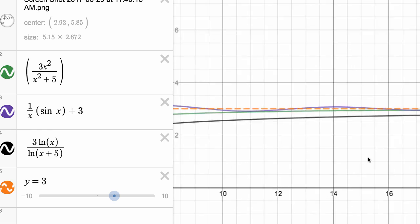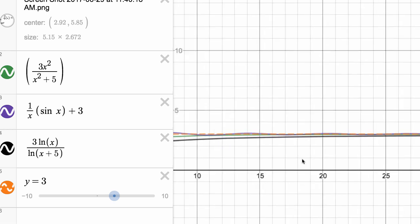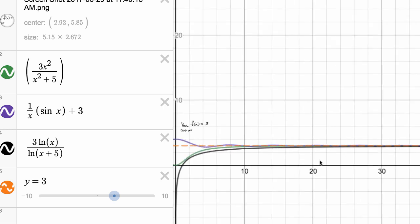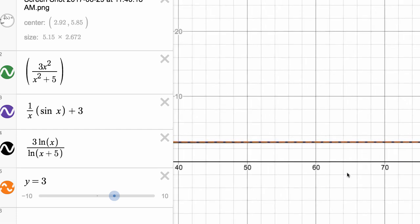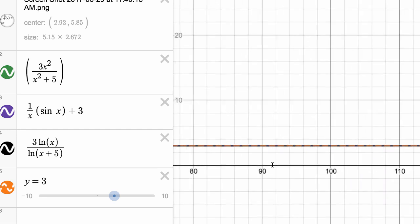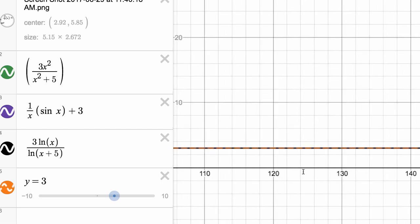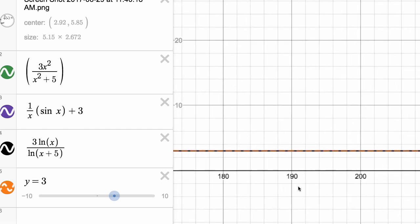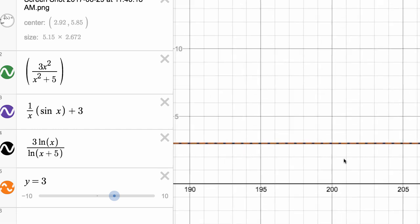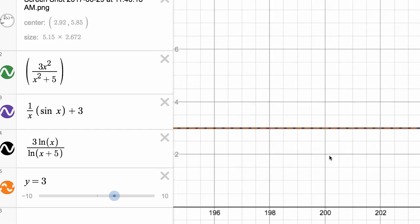But as we get much larger, let me actually zoom out a ways, and then I'll zoom in. So let's get to really large values. Actually even 100 isn't even that large if we're thinking about infinity. Even a trillion wouldn't be that large if we're thinking about infinity. But let's go to 200. 200 is much larger than the numbers we've been looking at.